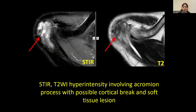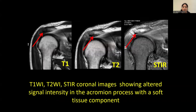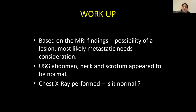These are the T2 and STIR-weighted images which show hyper-intensity involving the acromion process with possible cortical breach and soft tissue lesion. Further, T1, T2 and STIR coronal images show altered signal intensity in the acromion process with a soft tissue component within. Based on these MRI findings, possibility of a lesion most likely metastatic meets consideration.